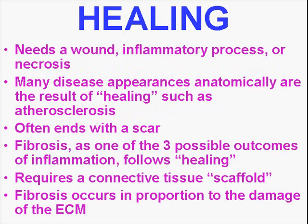What is healing? Healing cannot occur unless there's been something abnormal beforehand, like an inflammatory process or necrosis. Sometimes it ends with a scar, sometimes it doesn't. Sometimes there's a lot of fibrosis or scarring, or sometimes there's a little. That depends on a lot of factors, but the key player in the healing process is the extracellular matrix. If there's been a lot of damage to your extracellular matrix, chances are there's going to be a lot of fibrosis. And we're going to see this when we talk about second and first intention healing.